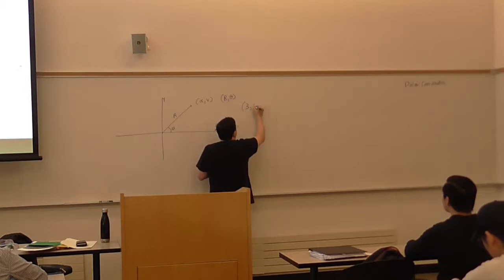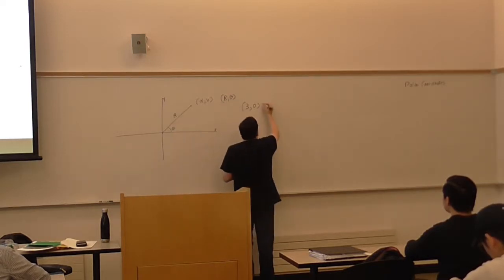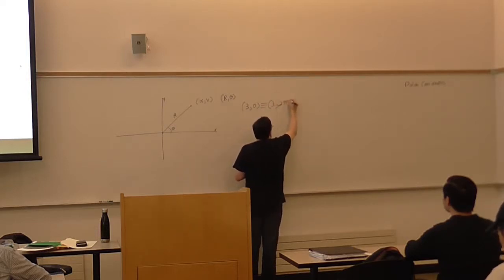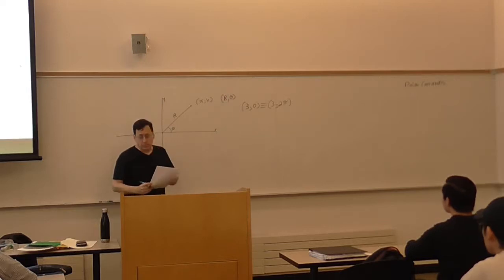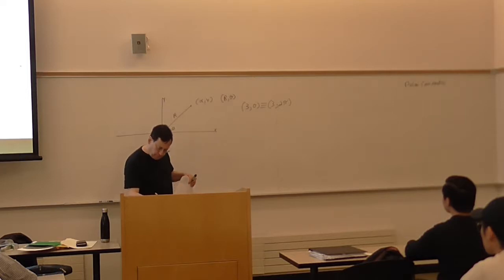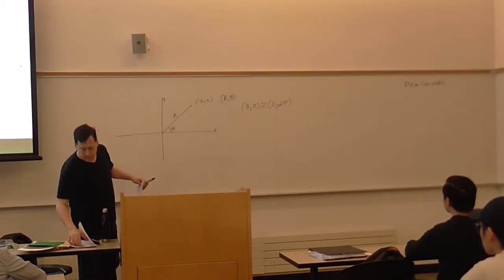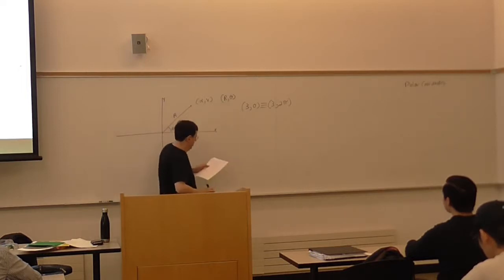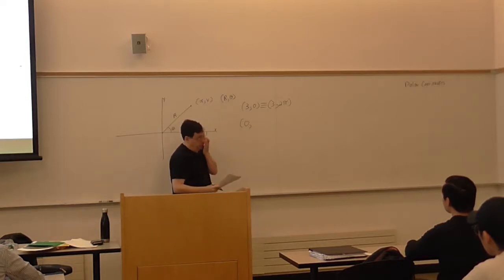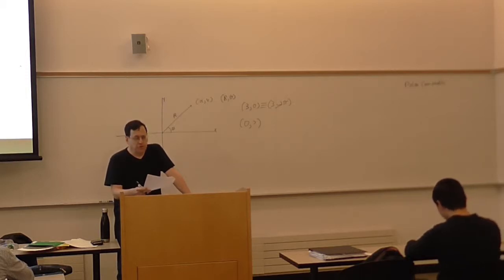For example, if I had a point (3, 0) — distance 3 from the origin at angle 0 — that would be the same as (3, 2π), since 2π radians brings you back to the same position. In fact, there would be many ways to describe each point. The worst case is the origin, where you can put in any angle you wish and it still refers to the same point. So something to keep in mind: these coordinates are not unique.